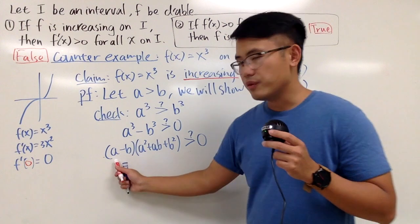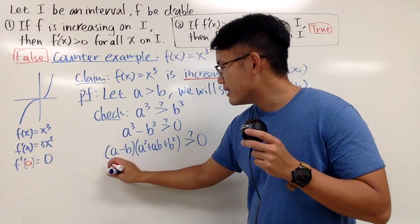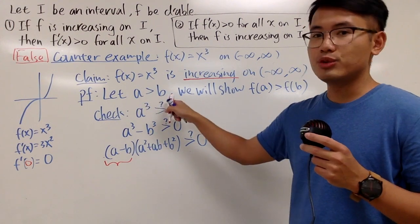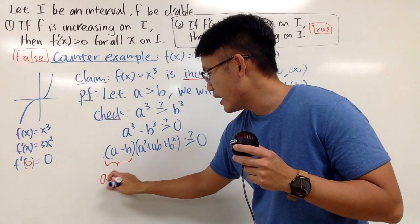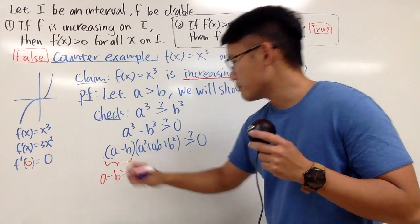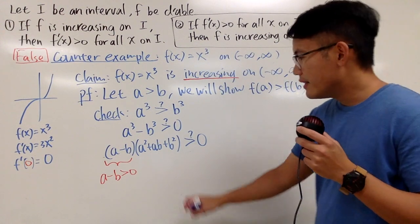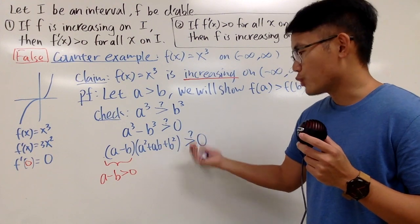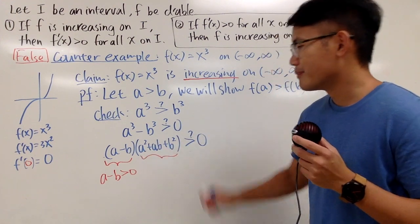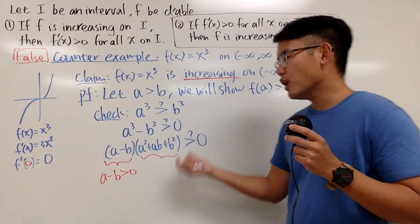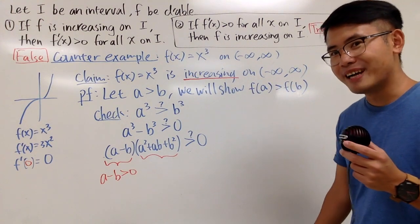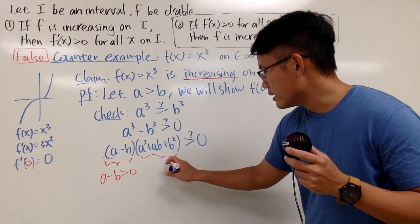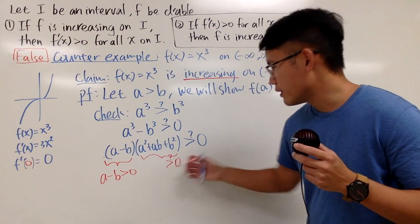For the first factor, (a − b) is greater than zero because we assumed a > b — so a − b is positive. Now all we have to do is show that the second factor, a² + ab + b², is also greater than zero, because positive times positive will give us positive.